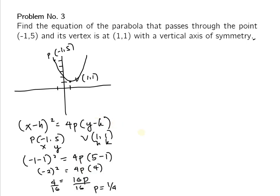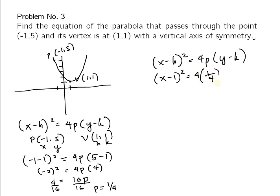Since we now have p = 1/4, h = 1, and k = 1, we substitute into the standard form: (x - 1)² = 4 × (1/4) × (y - 1). The 4s cancel, giving the equation (x - 1)² = y - 1.